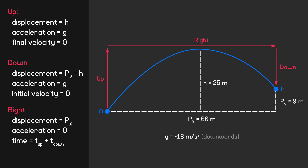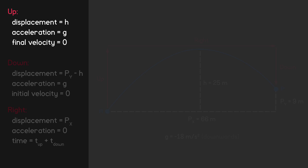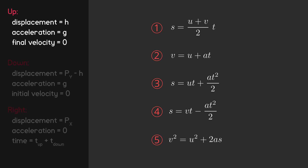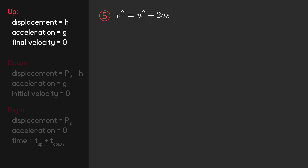Let's begin by writing an equation for our initial upwards velocity. We'll start with a kinematic equation that contains initial velocity as well as our known variables: displacement, acceleration, and final velocity. Equation 5 fits these criteria, so let's take that and substitute in what we have. Final velocity becomes 0, acceleration becomes G, and displacement becomes H. We can rearrange to solve for initial velocity squared, and then take the square root of both sides to arrive at an equation for initial upwards velocity.